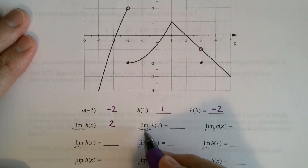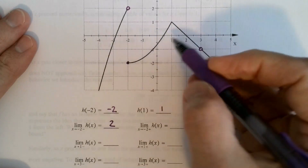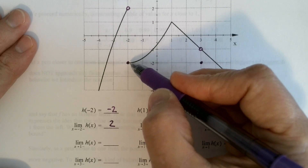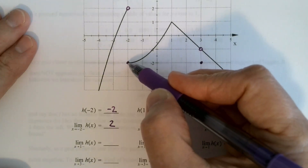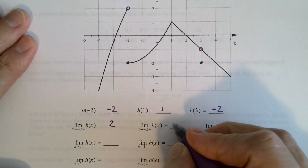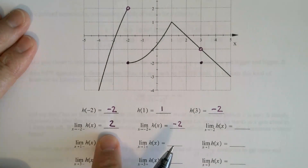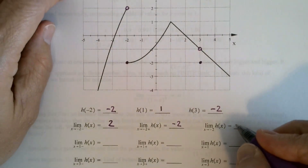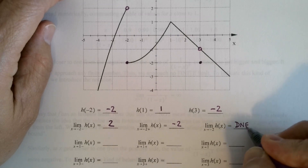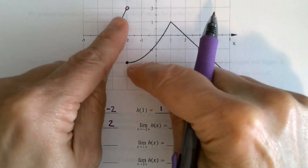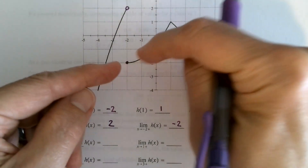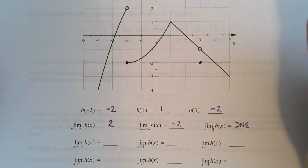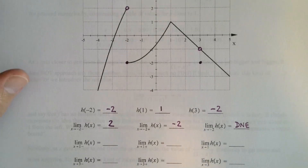What happens when we approach negative 2 from the positive side? Now the value of the function as x gets closer and closer to negative 2 is approaching this point here, so the y value is approaching negative 2. The limit from the left is 2 and the limit from the right is negative 2. What do we say about the two-sided limit? It does not exist — we're not going to the same location.